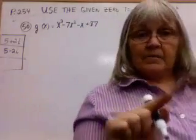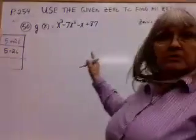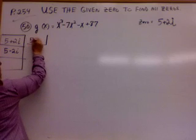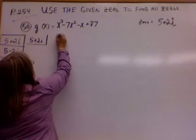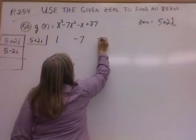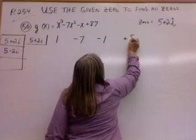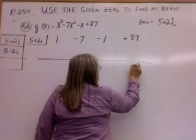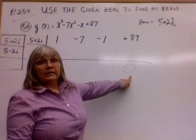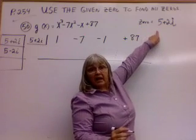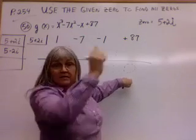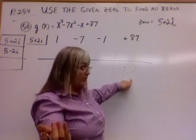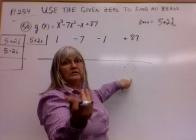Let's get started. We're going to use synthetic division and depress the equation. And since we have two answers, we're going to depress it twice. Watch. First thing that goes in here: five plus two i. Let's put our coefficients: one, negative seven, negative one, plus eighty-seven. We're going to draw a line here. We're going to get ready at the end. Let's get started.